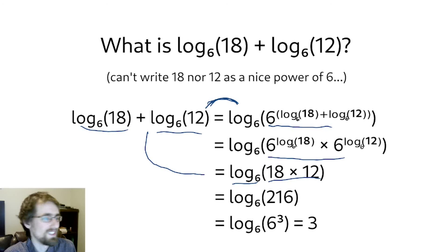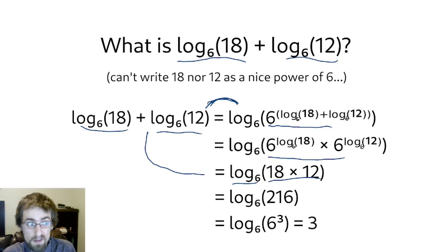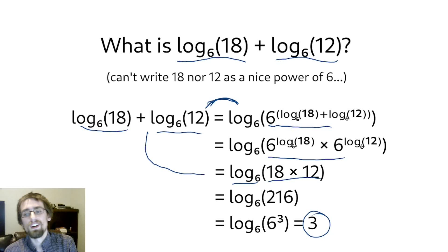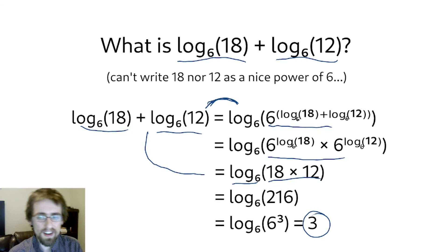As a side note, I find it interesting that even though we don't know exactly what log base 6 of 18 or log base 6 of 12 are individually, we know that when added together they give exactly 3. This is all I have for this video — it's just a slightly different way to think about logarithms, not name-changing or anything, but it highlights a different aspect. If the original way felt cumbersome, hopefully this new way is a bit more intuitive for you. Thanks for watching.